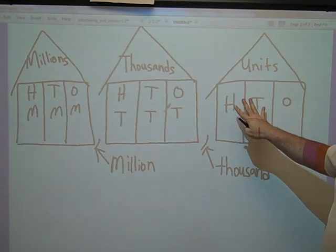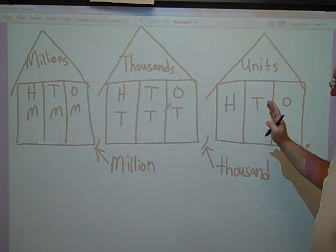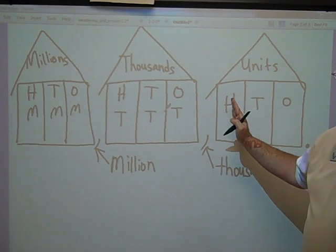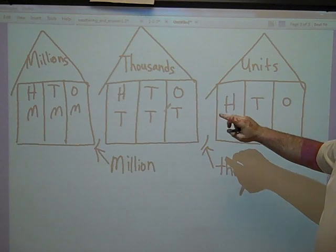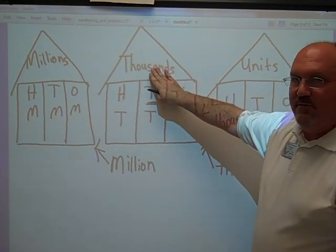If you can keep track of where everything goes then you'll know a lot about place value. As the numbers change place values they get larger. As the numbers change place values this way they get smaller.